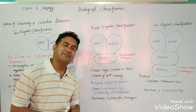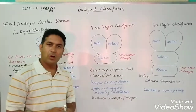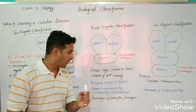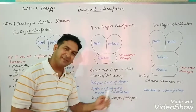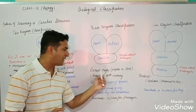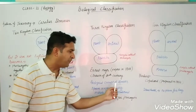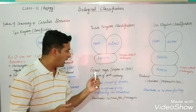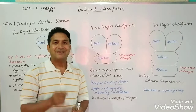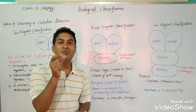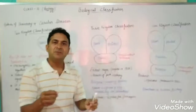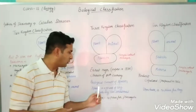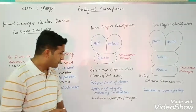Ernst Mayr was also known as the Darwin of the 20th century. He gave one very important concept: the biological concept of species. According to this concept, a species is a group of organisms that can interbreed with each other. This was the first clear scientific definition of a species.